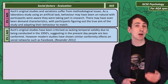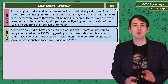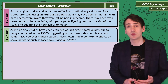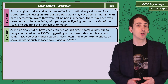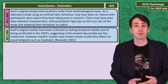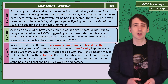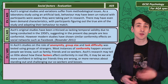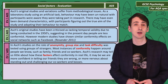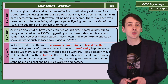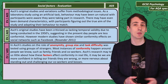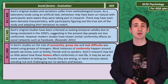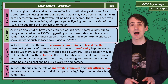Asch can be criticised as lacking temporal validity, meaning that maybe these results applied to the 1950s but not today. However, some modern research has shown similar conformity effects in online groups. All of Asch's variations were conducted on groups of strangers, but most examples of conformity happen around people we know — friends, family, or co-workers. It might be easier or harder to resist conformity around people we know and care about, so Asch's research might tell us little about how conformity works in the real world.